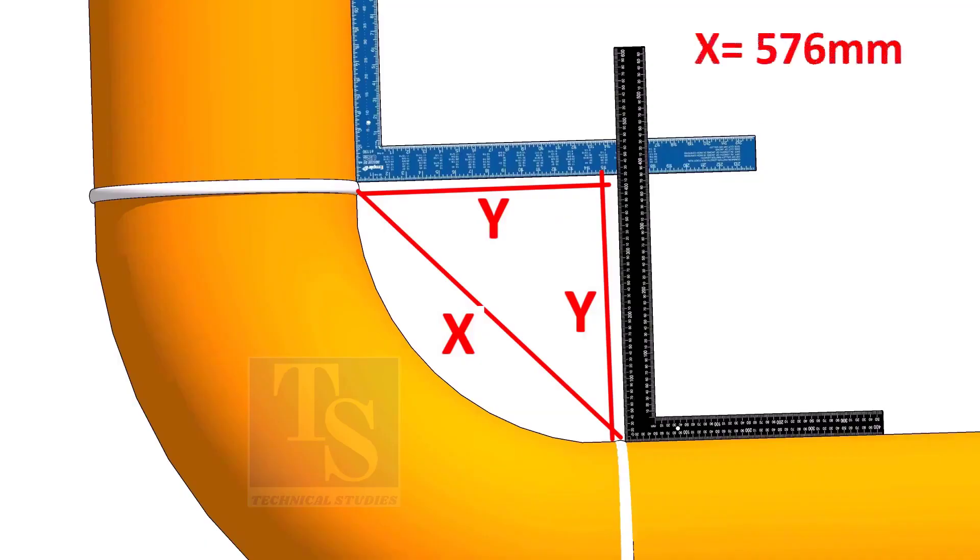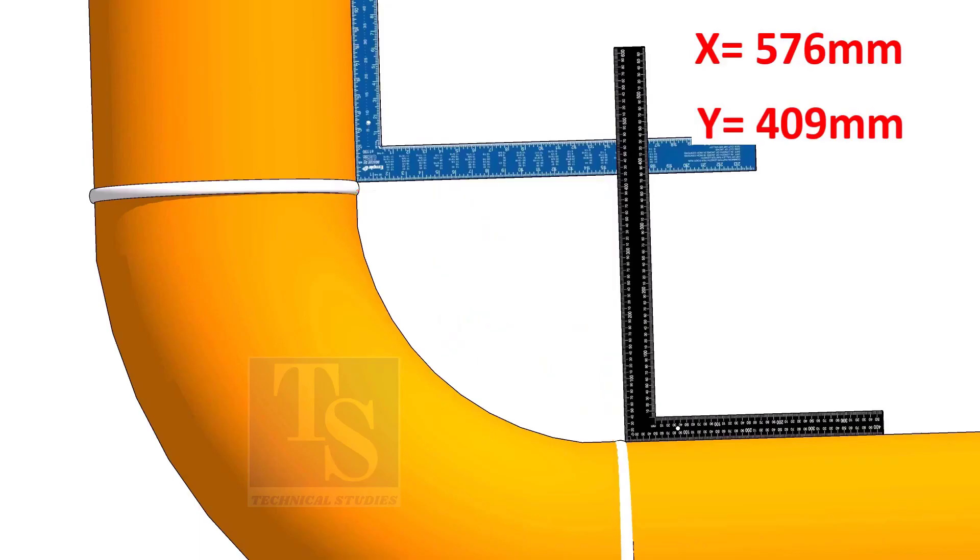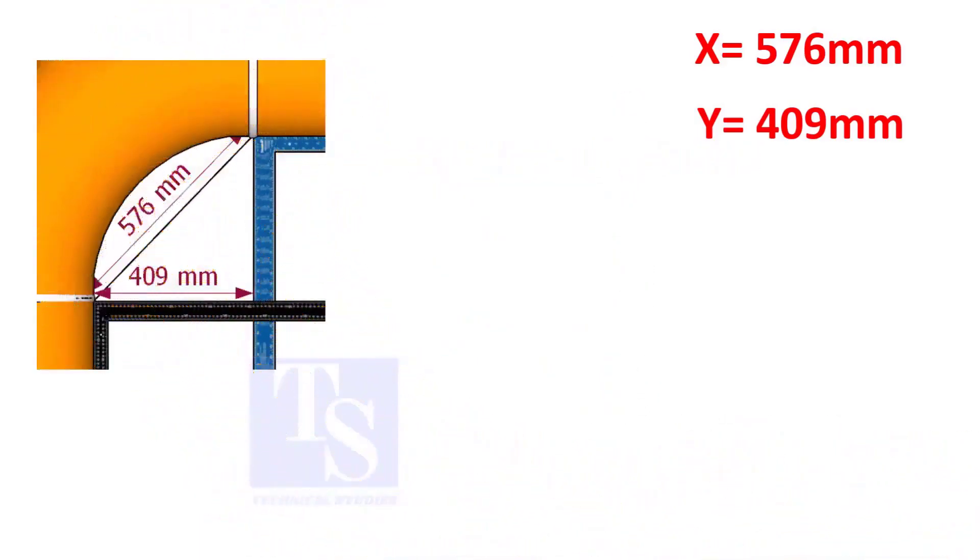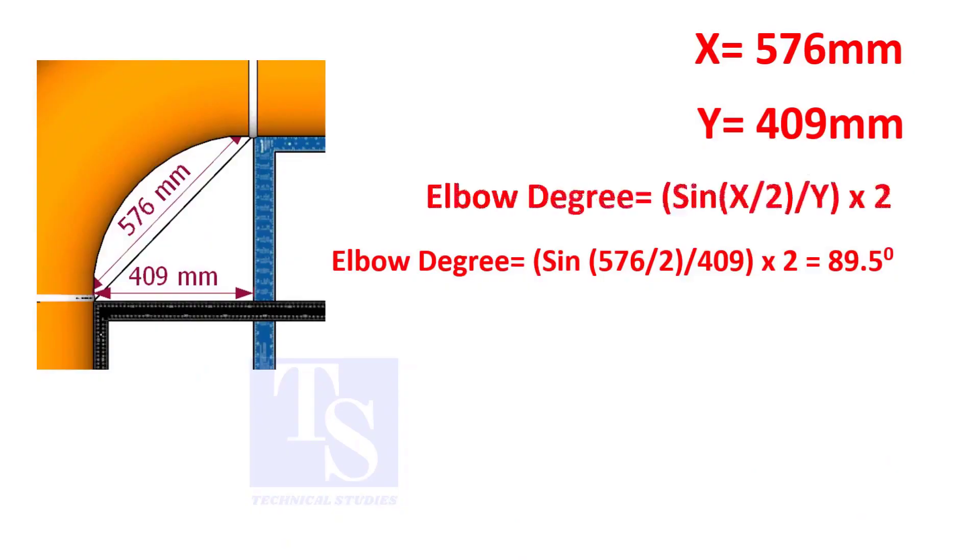Assume that the value of x is 576 and the value of y is 409 millimeters. Apply the formula. The answer is 89.5 degrees.